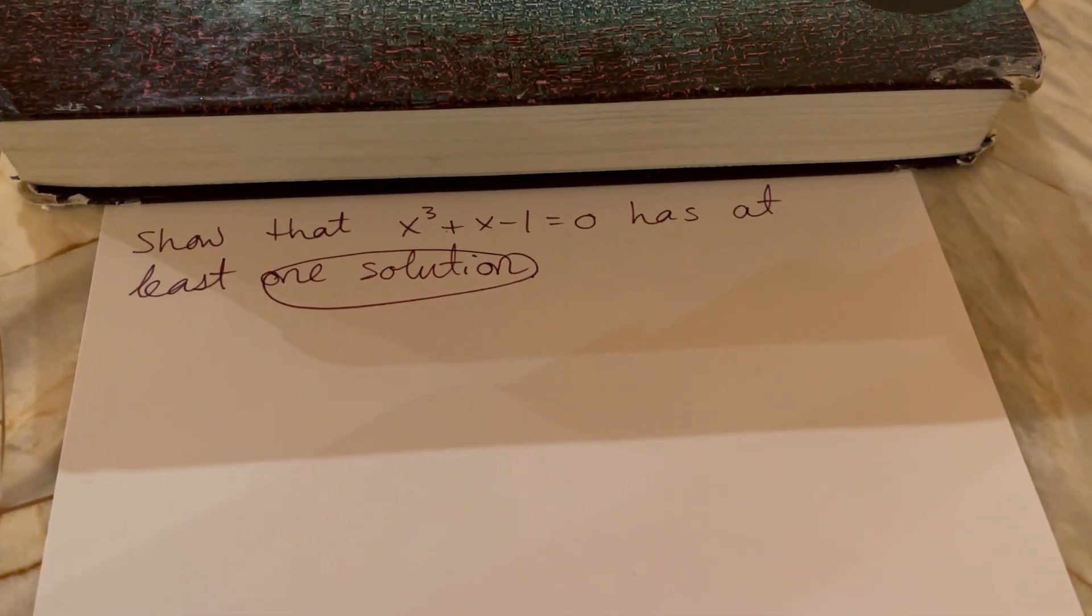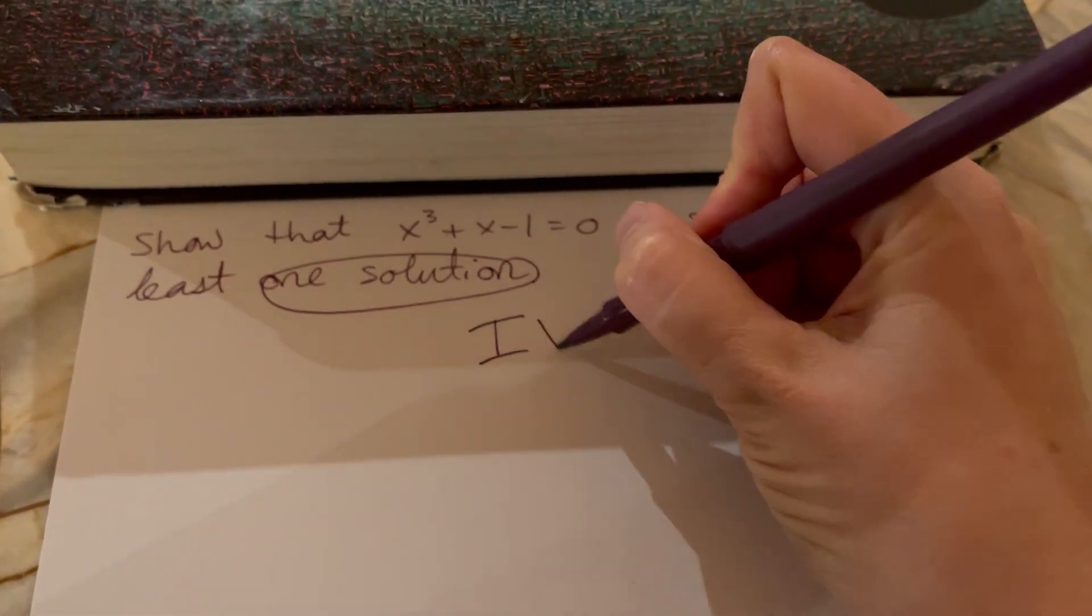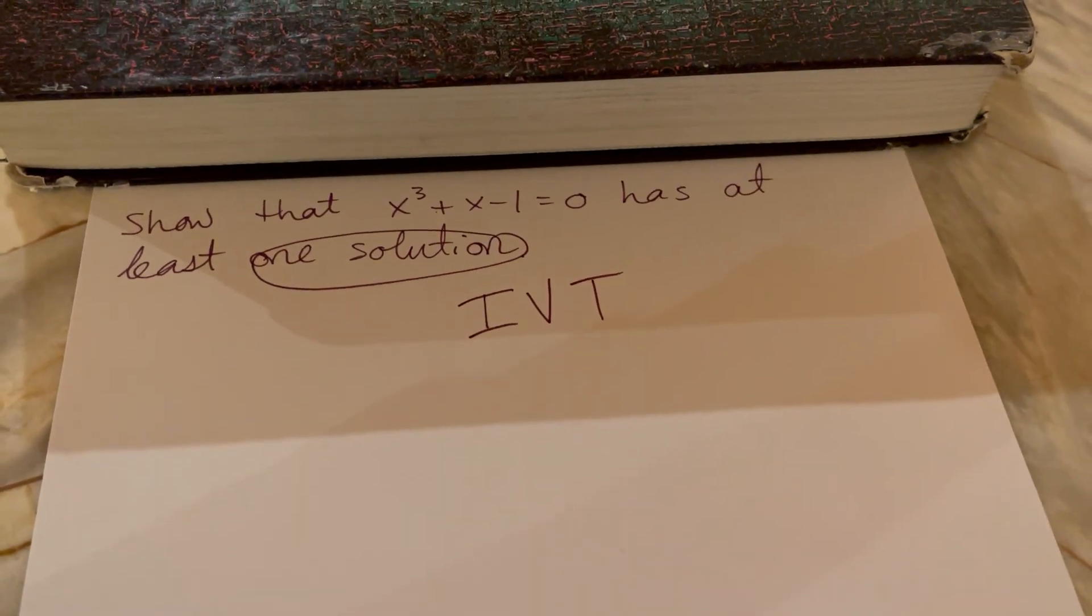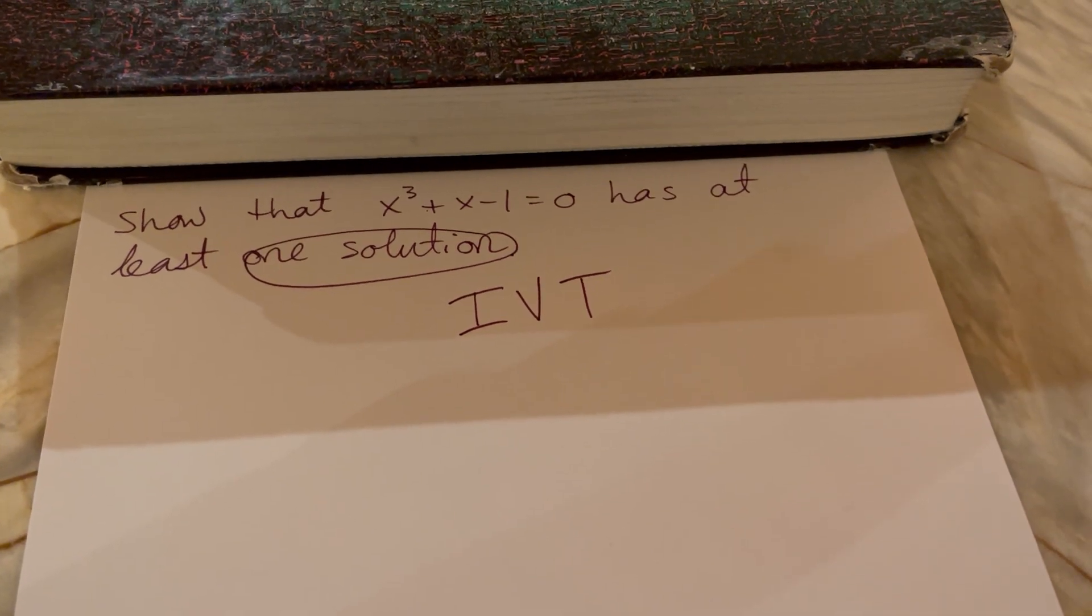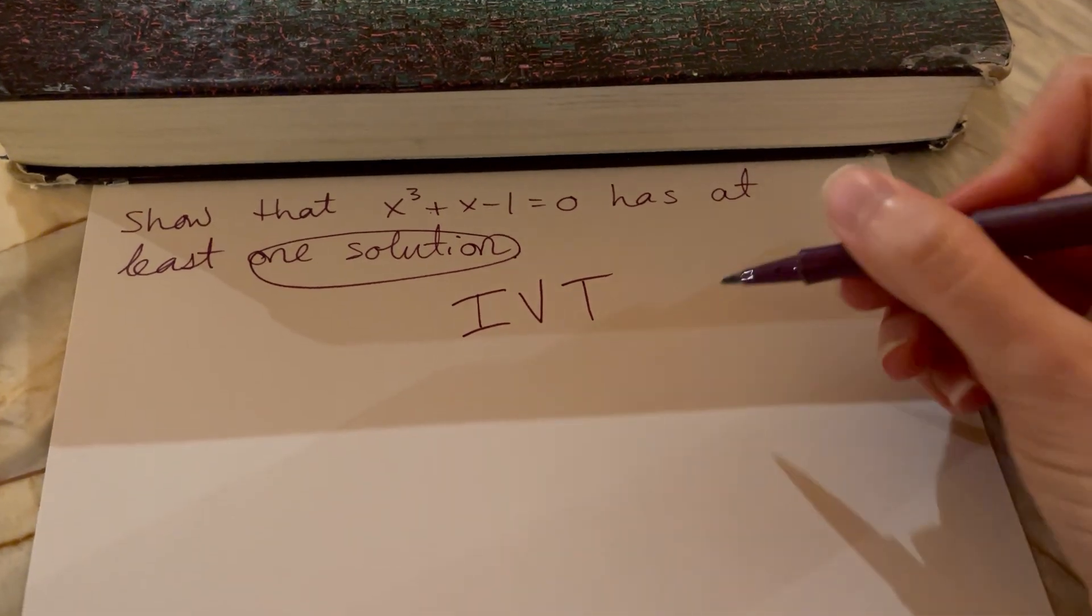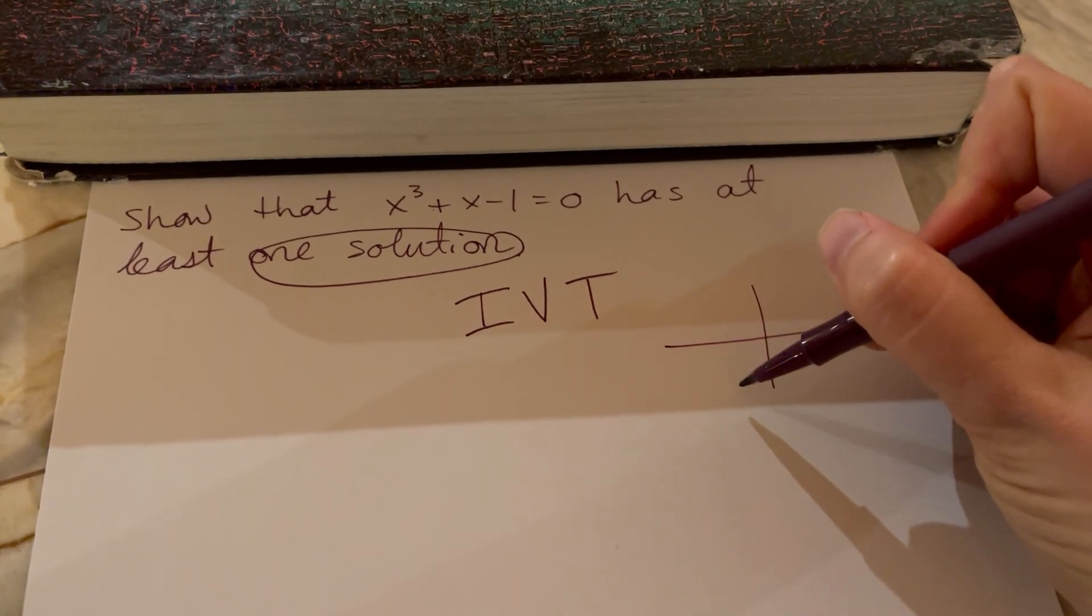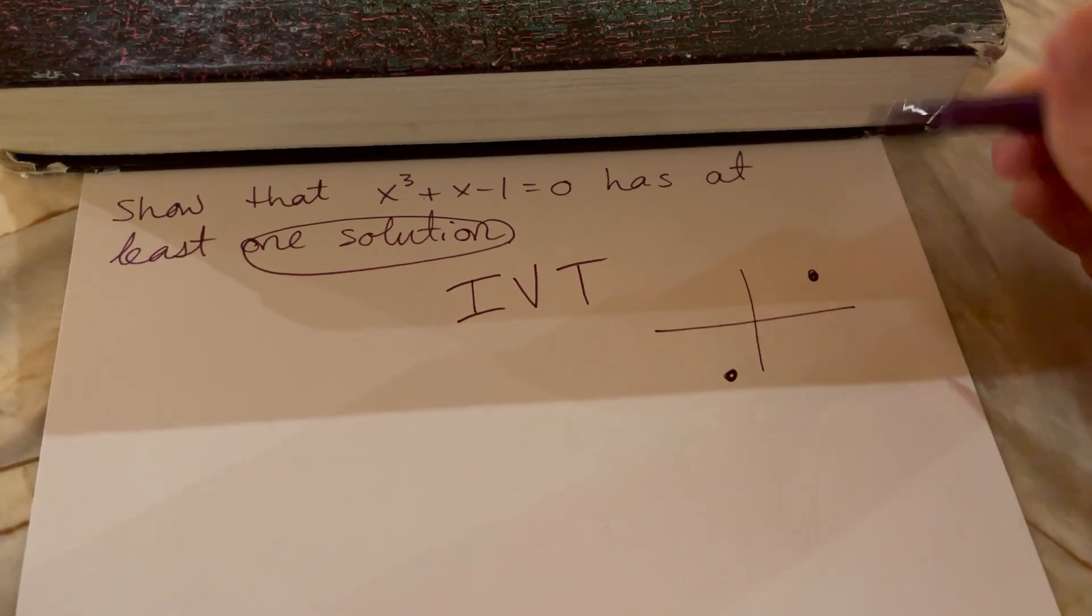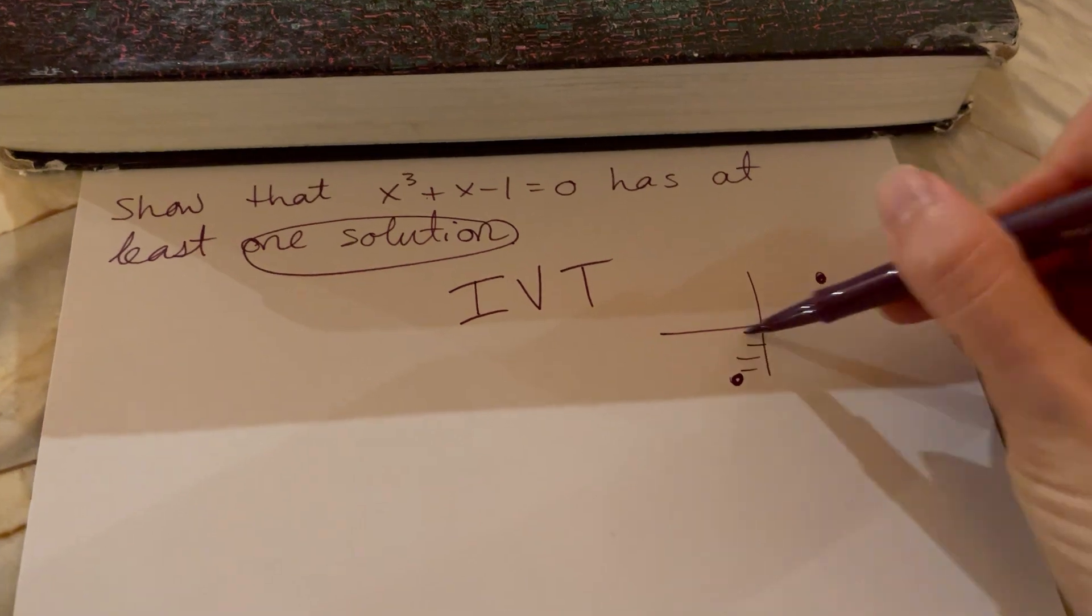This should make you think, show it has at least one solution or it might say one root or one zero. This should make you think of the Intermediate Value Theorem. And Intermediate Value Theorem works for continuous functions and it shows that if you have a function value that is at a certain height and later is at a different height...